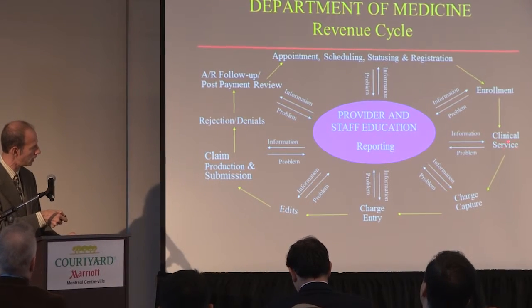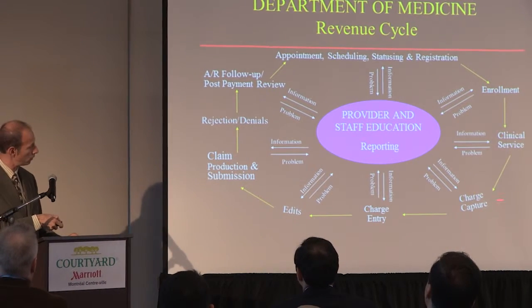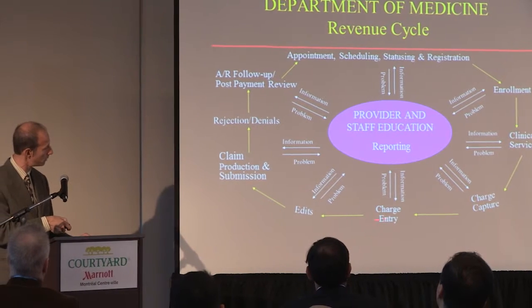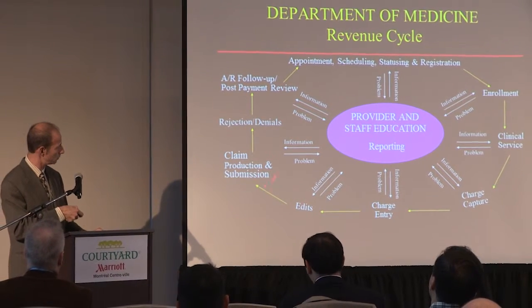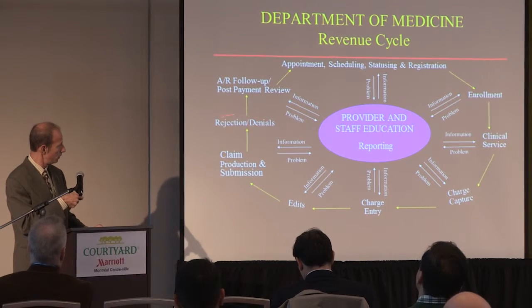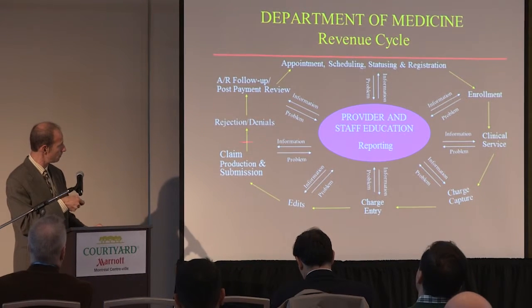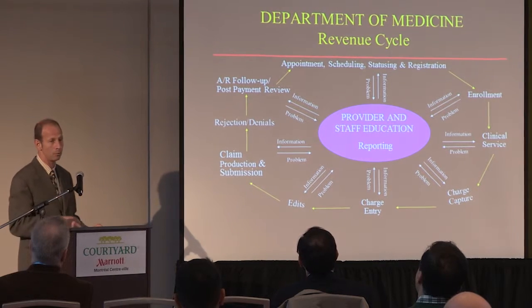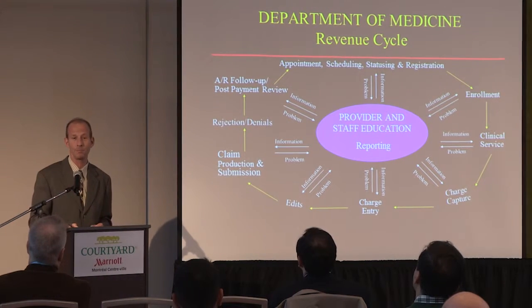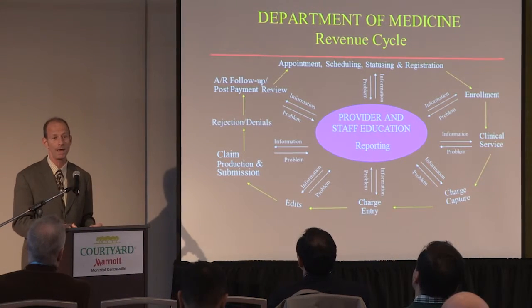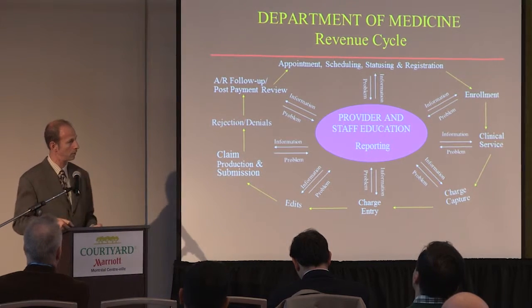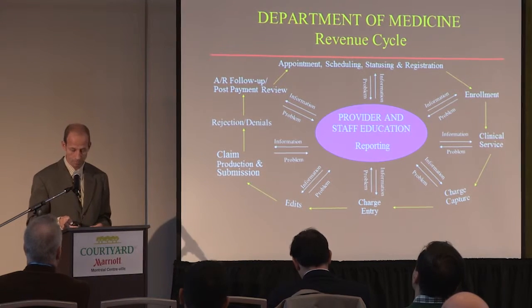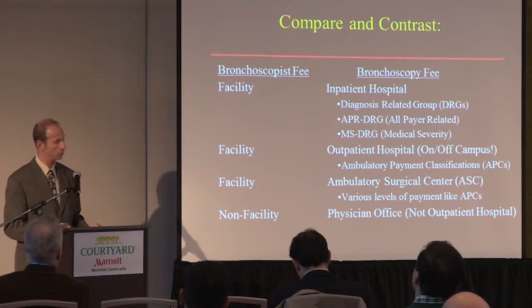After we've done our bronchoscopy, we've got to make sure we have all the charges captured and entered into whatever billing system. It clears whatever edits so that we can send a bill out. The insurance companies, including Medicare, can decide to pay or reject it. Then we have to figure out which ones did they pay, which ones didn't they pay, and why didn't they pay them? And then it just goes around and around as we continue seeing patients.